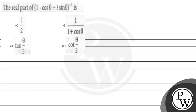So, the first question is: find the real part of (1 minus cos theta plus i sine theta) whole inverse.